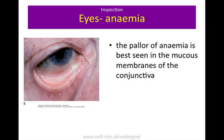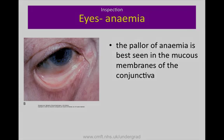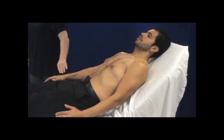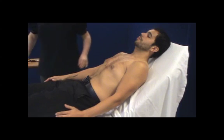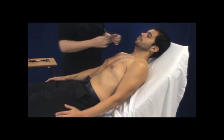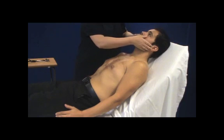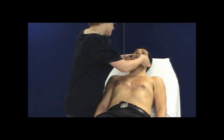When looking for anaemia, look at both eyes. Tell the patient 'I would like to have a look at your eyes' before pulling down one of the lower lids to check for conjunctival pallor.